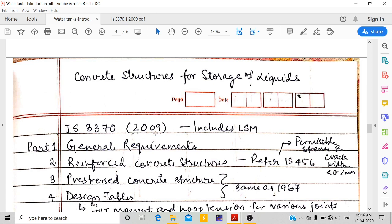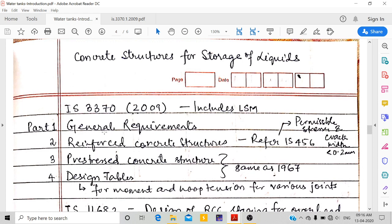IS 3370:2000 is the latest version. This includes the limit state method; previously we had only working stress method. This is not only for water tanks but for all storage of liquids - petrol or any other chemicals.